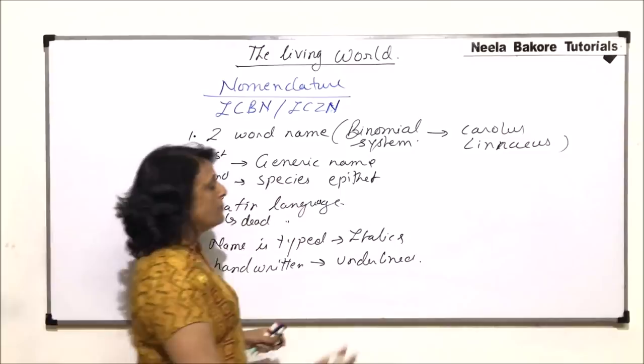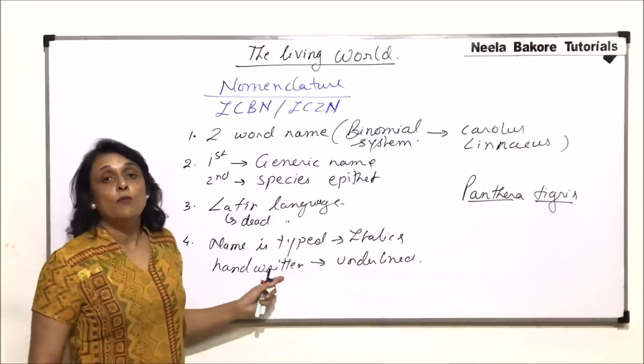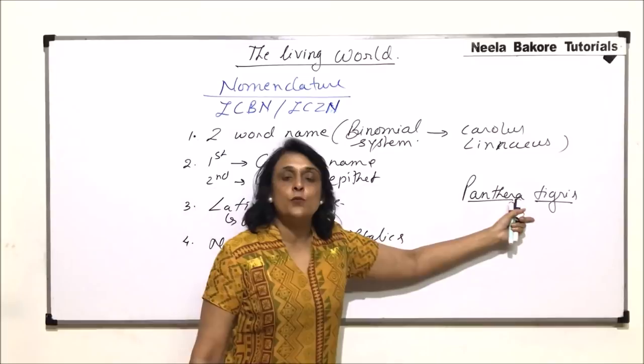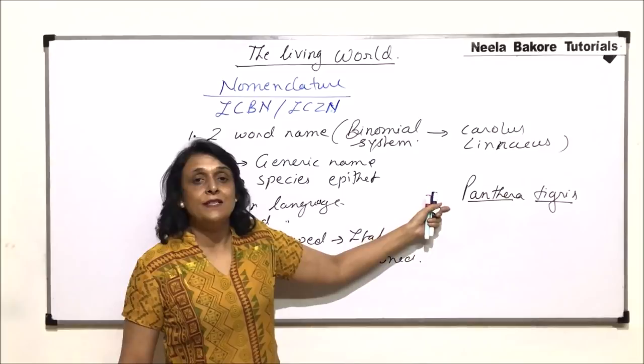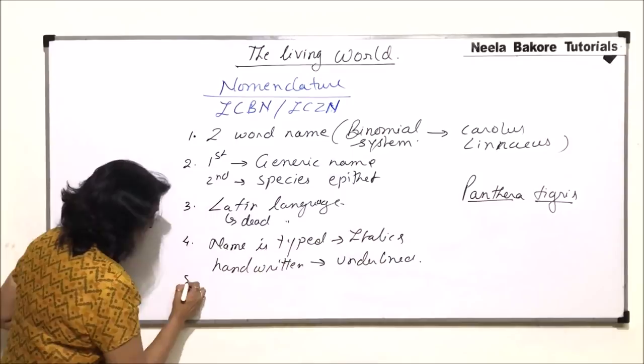Let us take one example. Suppose we write Panthera tigris — this is the scientific name of the tiger. We have two words: Panthera, which represents the genus, and tigris, which represents the species. From this we can also understand that the genus or generic name always starts with a capital alphabet, and the species always starts with a lower case.